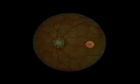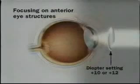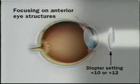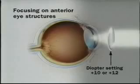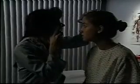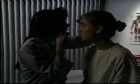The tiny bright reflection at the center of the fovea may help orient you. To focus on more anterior structures, such as opacities in the vitreous or lens, change the diopter on the ophthalmoscope to more positive numbers, such as plus 10 or plus 12. Repeat the ophthalmoscopic examination on the patient's right eye using your right hand and right eye.